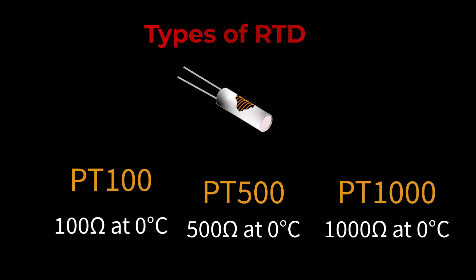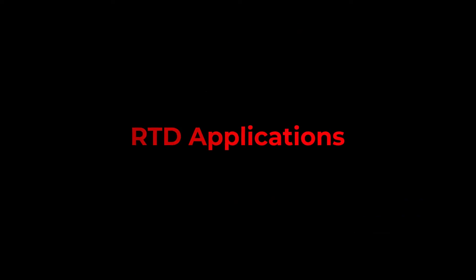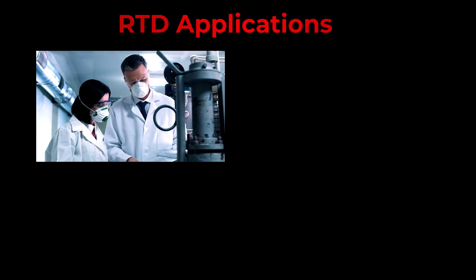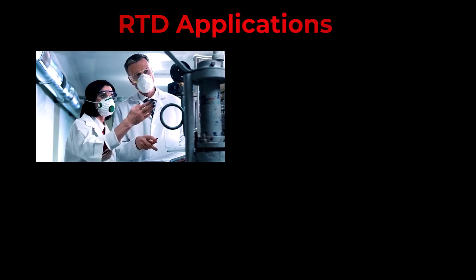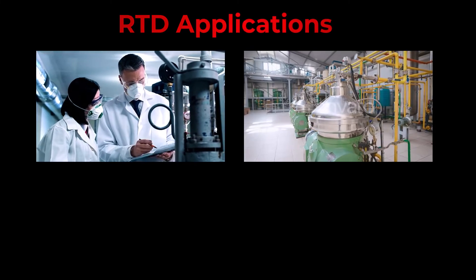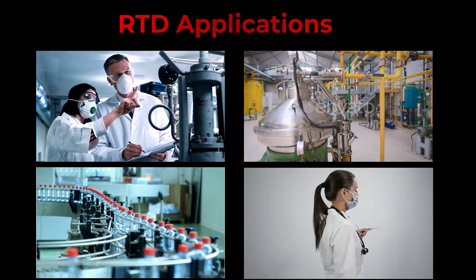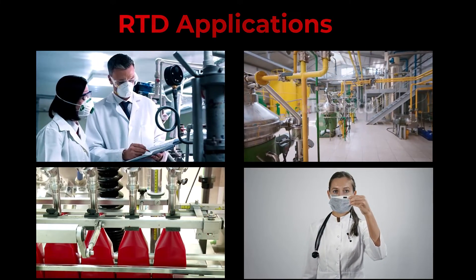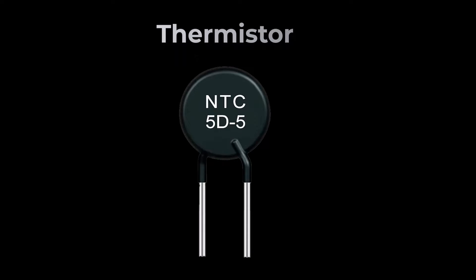RTDs are used in scientific research and experiments requiring precise temperature control. They are suitable for industries where temperature control is critical, such as chemical processing and manufacturing. RTDs are also found in medical equipment where accurate temperature monitoring is essential.